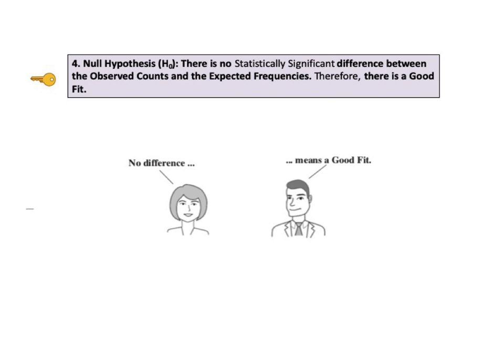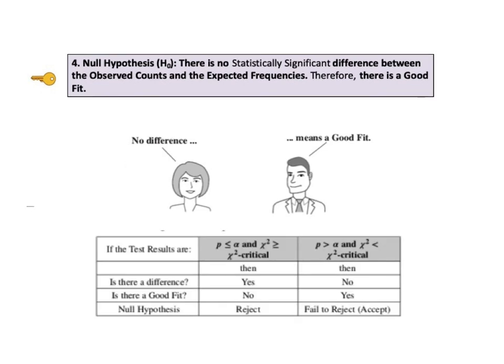Key to understanding number 4 gives us our null hypothesis: there is no statistically significant difference between the observed counts and the expected frequencies, therefore there is a good fit. Now this may be confusing at first because we are used to having H0 be a statement of nothingness — no difference, no change, or no effect. But all a good fit means is that there is no statistically significant difference. This table will help to reinforce this.